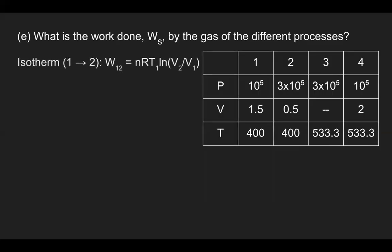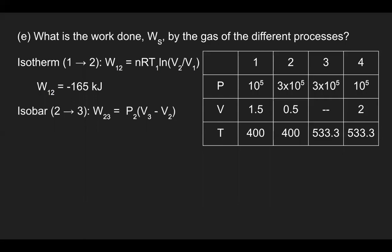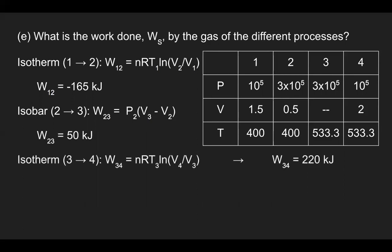For the isotherm one to two, using the equation with n = 45.1 moles, the universal gas constant, and T1 = T2 = 400 K, work comes out to negative 165 kilojoules. For the isobar two to three, work is pressure times change in volume, giving 50 kilojoules. Repeating the process for isotherm three to four with different volumes and temperatures gives 220 kilojoules, and for the isobar four to one, work is negative 50 kilojoules.